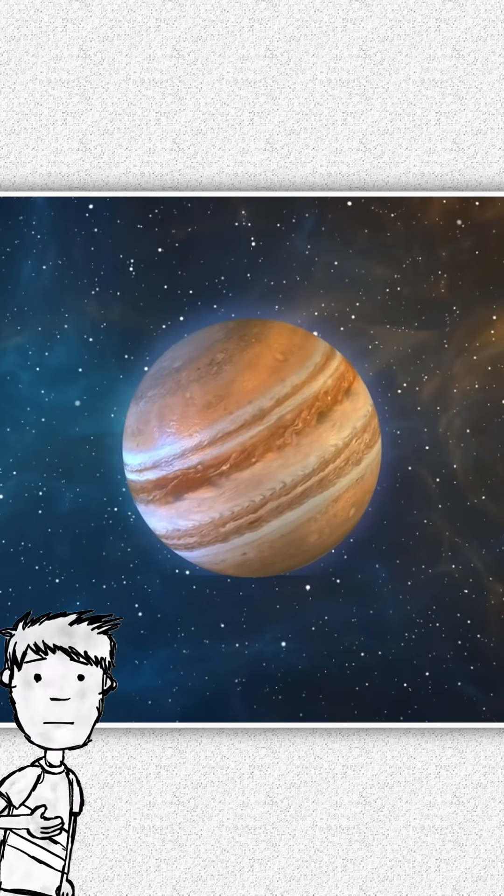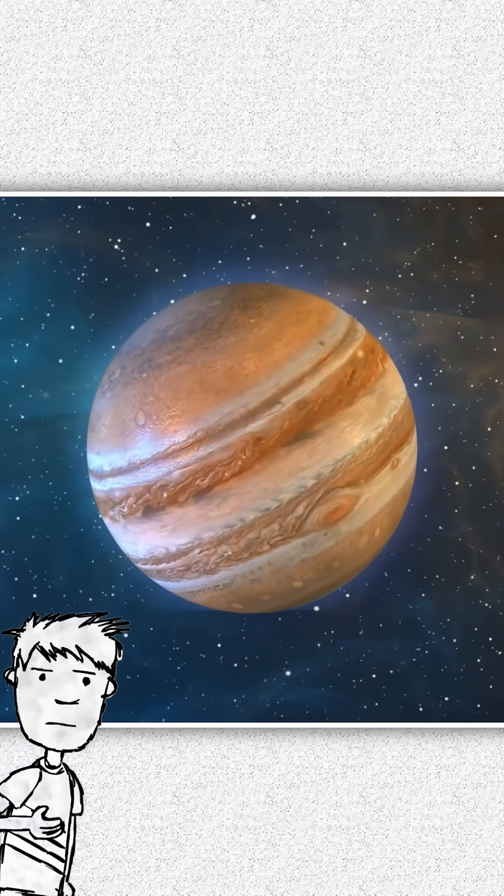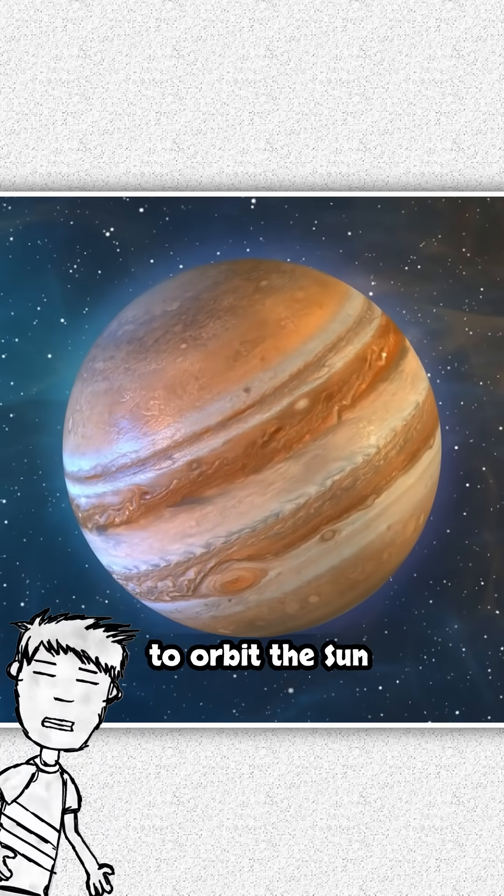Jupiter spins fast. One day lasts just 10 hours, the shortest of any planet, but it takes 12 Earth years to orbit the Sun.